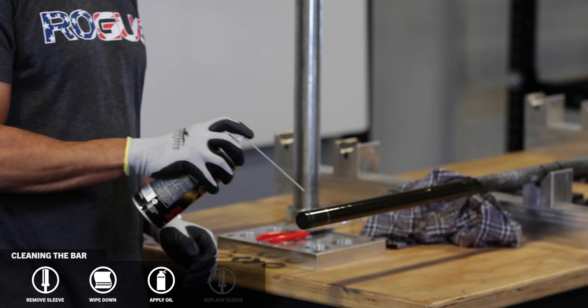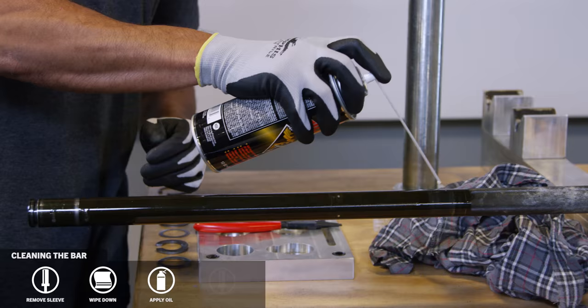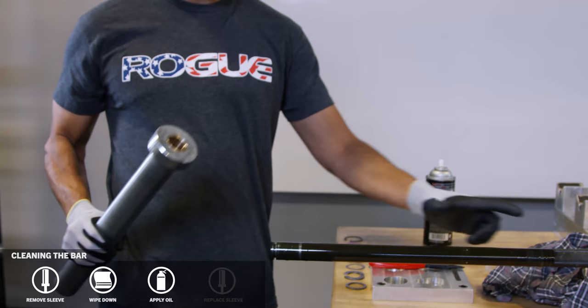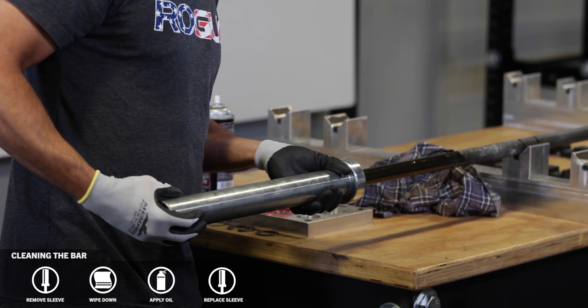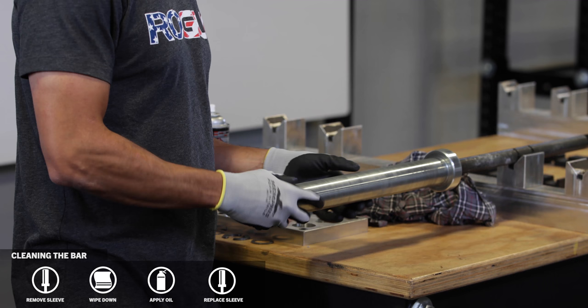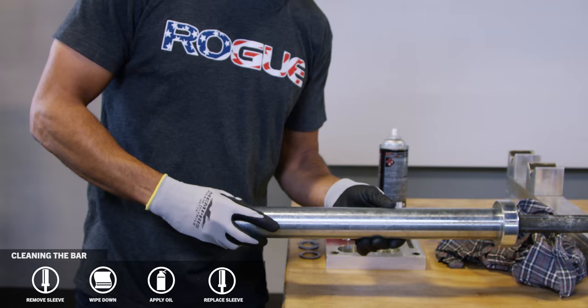So then spray some lubricant in the two locations where the bushings make contact with the shaft. You don't need to spray any lubricant in this area because there's no contact. Then carefully slide the sleeve back onto your barbell. Give it a spin to spread around the lubricant. Slide it back.